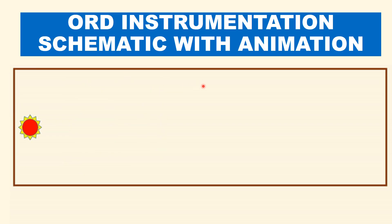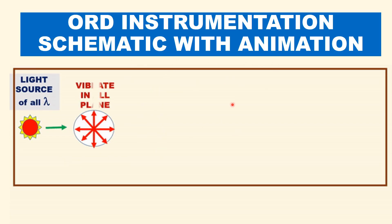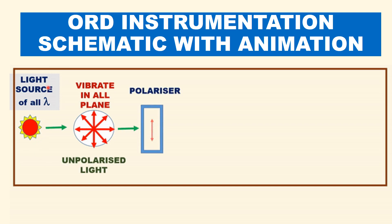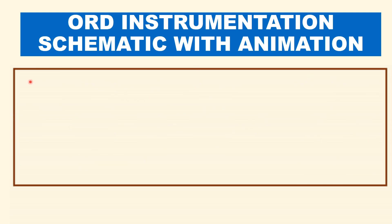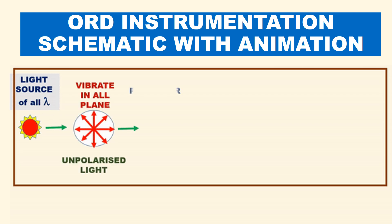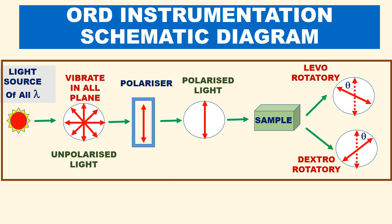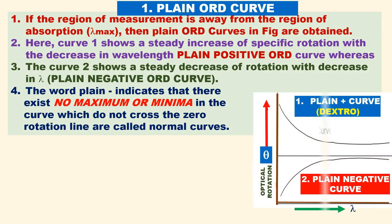Let us now see the ORD instrumentation schematic with animation. It consists of a light source emitting all wavelengths in the UV-visible region. It is similar to polarimetry instrumentation except the light source emits light of all wavelengths. This is the schematic diagram of ORD instrumentation. The angle of rotation can be clockwise or anticlockwise.